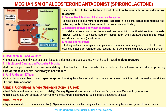Clinical conditions where spironolactone is used: heart failure — reduces morbidity and mortality; primary hyperaldosteronism such as Conn's syndrome; resistant hypertension; edema associated with cirrhosis or nephrotic syndrome; and hirsutism and acne due to its anti-androgenic effects.